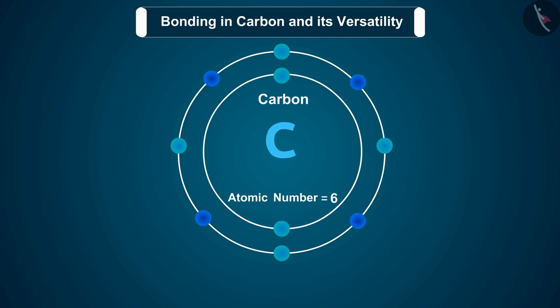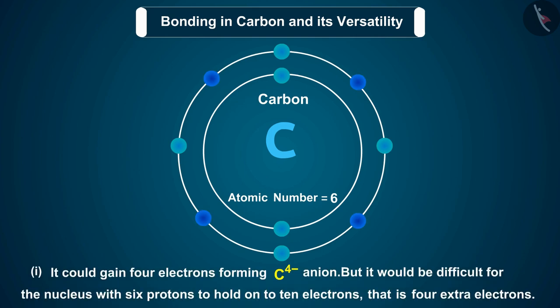One, it could gain four electrons forming C4 minus anion, but it would be difficult for the nucleus with six protons to hold on to 10 electrons, that is four extra electrons.